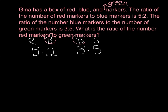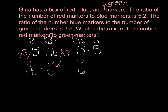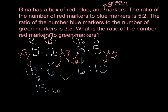So we can use equivalent ratios to compare these. Both 2 and 3 go into 6. To get from 2 to 6 you do times 3, and whatever you do to one side you have to do to the other, so our 5 becomes 15. To get from 3 to 6 you do times 2, so 5 times 2 gives you 10. We write out our new ratio: 15 — that's red — to 6 — that's blue — to 10 — which is green. The question asks for the ratio of red markers to green markers, so our ratio is 15 to 10.